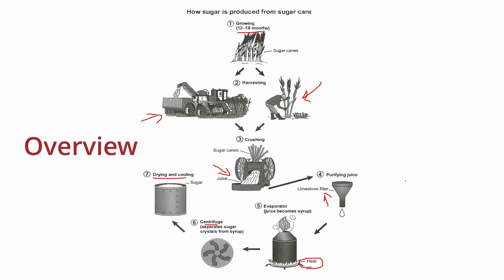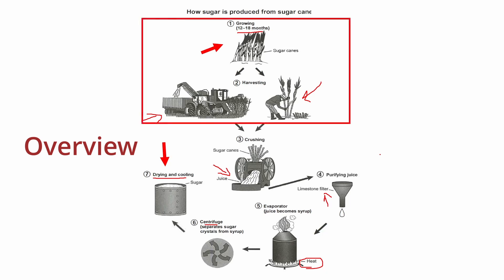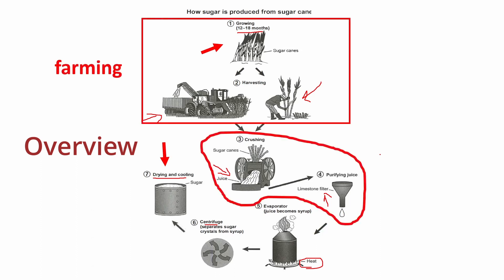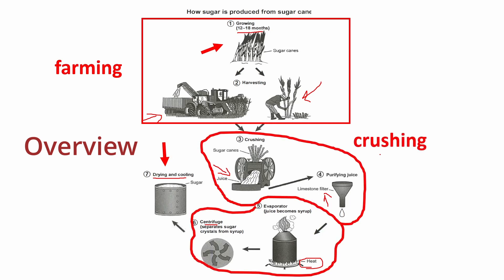For the overview in process writing, all we need to do is mention the number of steps, the start point, the end point, and the main steps of the process. To do that, we can group some of those stages and label them as one specific step. For instance, growing and harvesting can be grouped together and called farming. Crushing and purifying together can be called crushing. The heating process and using the centrifuge can be called separating. And finally, we have drying.